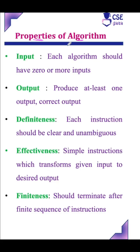Properties of an algorithm. There are 5 properties of an algorithm: input, output, definiteness, effectiveness, and finiteness. An algorithm is a sequence of unambiguous instructions for solving a problem.